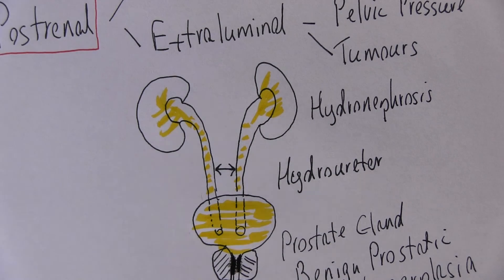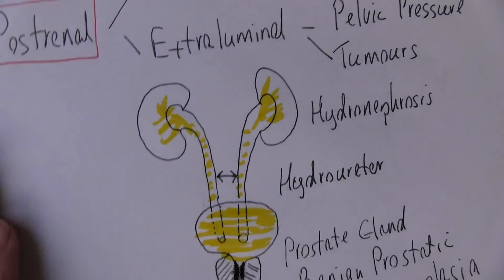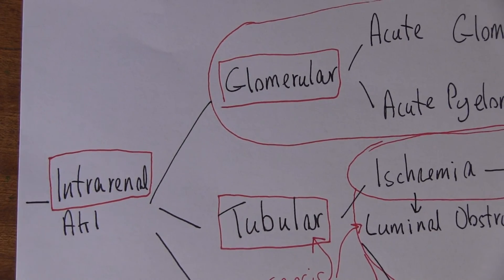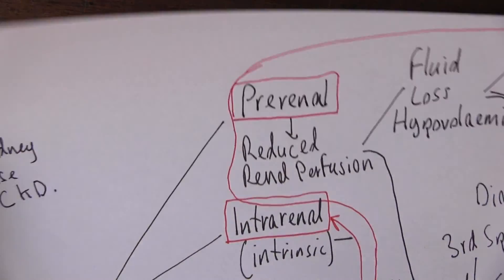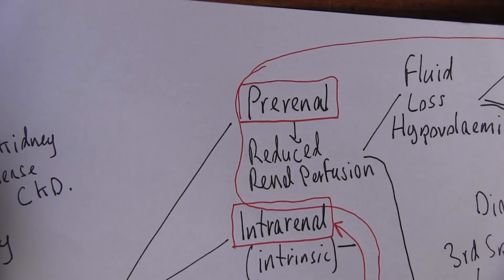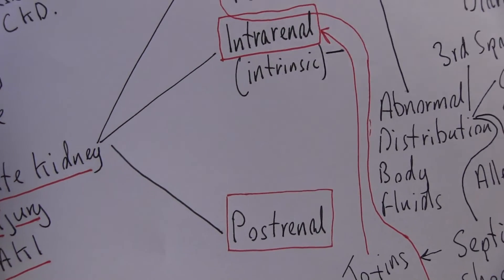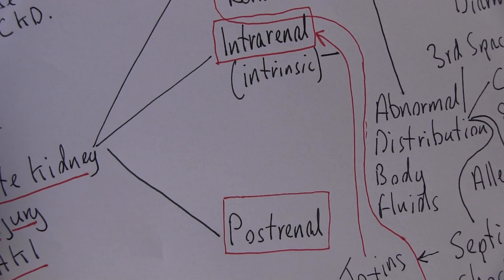So that was post-renal, which is quite simple. So there we are — acute kidney injury: prerenal, intrarenal, or post-renal.